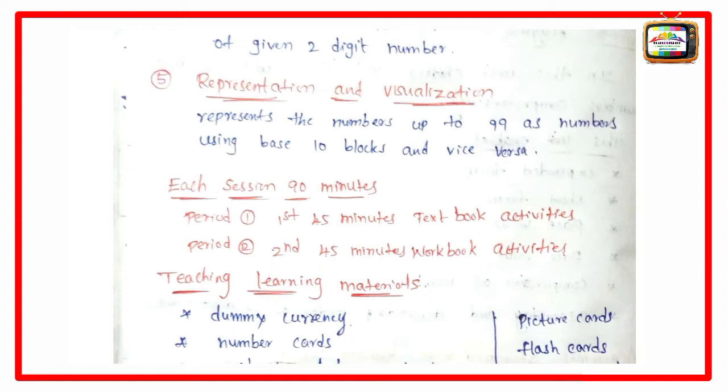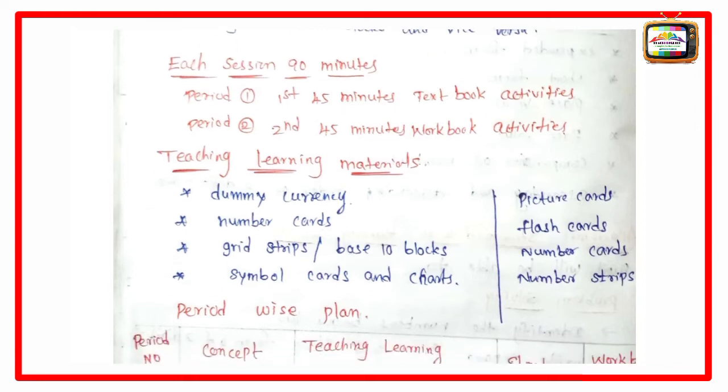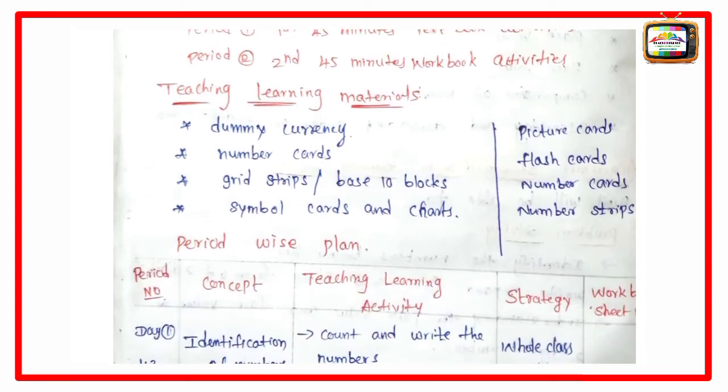Each session 90 minutes. First period, first 45 minutes, belongs to textbook activity. Second period belongs to workbook activity. Teaching learning materials: dummy currency, number cards, grid strips, base 10 blocks, symbol cards and charts, picture cards, flash cards, number cards, number strips also.